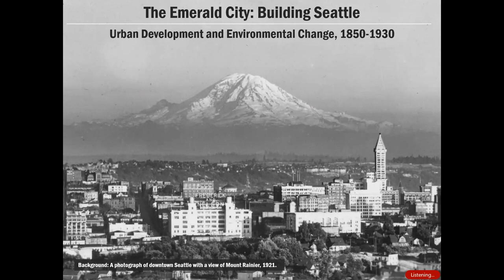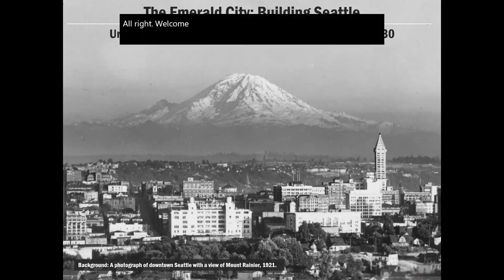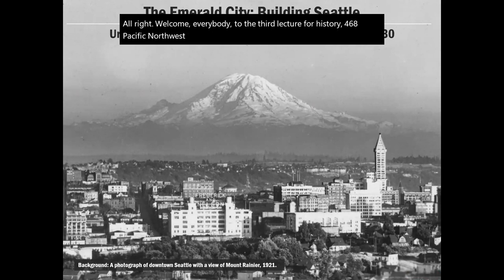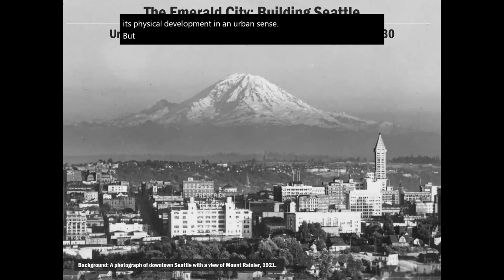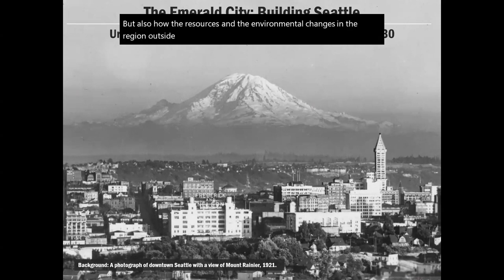Welcome everybody to the third lecture for History 468, Pacific Northwest. Today we're exploring the history of Seattle, including its physical development in an urban sense, but also how the resources and environmental changes in the region outside the city — known as its hinterlands — were key to the city's development.